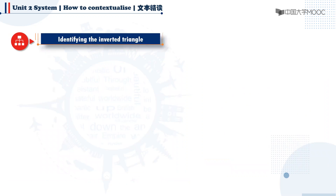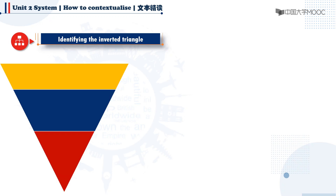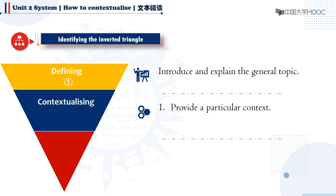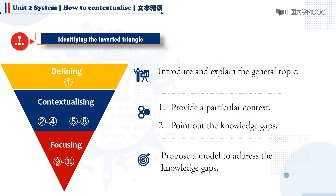So far, we have analyzed the meaning and function of each sentence in Text 3. How do these sentences fit into the inverted triangle structure? Since the stage of defining is where you briefly introduce and explain the research topic, sentence one fits into this stage as a general announcement. In the stage of contextualizing, sentences two to four provide disciplinary context regarding the scale and form in modeling the ocean ecosystem. Sentences five to eight identify the knowledge gaps — the problems to be solved in the current study. Last but not least, the remaining sentences perform the function of focusing, where the authors propose a model to address the knowledge gaps.